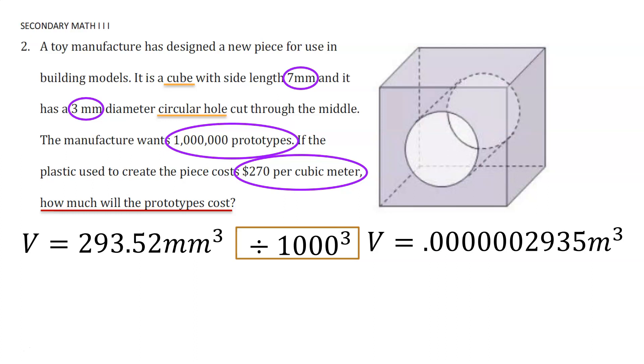Now that we understand how unit conversions work, let's return to our problem. If we found the volume in cubic millimeters, we can divide by 1000 to the third power to find the volume in cubic meters. This gives us the volume of one of these toy pieces.